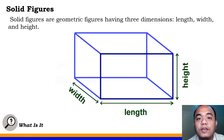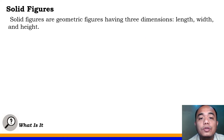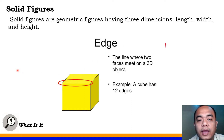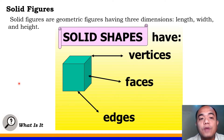Solid figures are geometric figures having three dimensions: the length, the width, and the height. That's why solid figures are commonly called three-dimensional figures. What do you call the side of a solid figure? We call this a face. These are examples of the faces of the rectangular prism. What do you call the point where two faces intersect in a line segment? We call this an edge — the line where two faces meet on a three-dimensional object. What do you call the point where two edges meet or intersect? We call this a vertex — a point where two edges intersect. So, solid figures have faces, edges, and vertices.